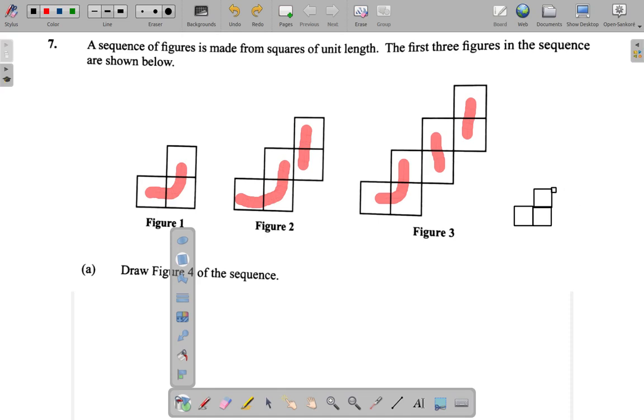Then on the side like this. You have two. Two blocks like this. That's like figure 2.